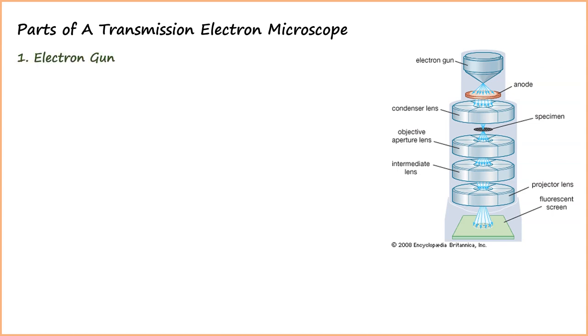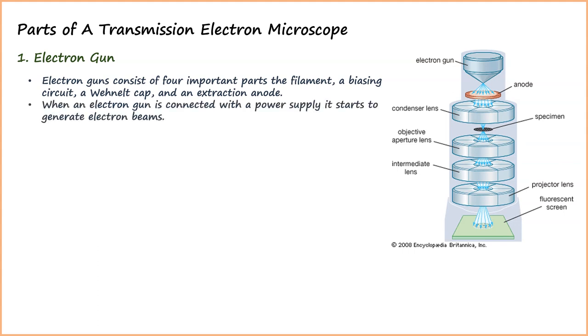An electron gun consists of four important parts: the filament, a biasing circuit, a Wehnelt cap, and an extraction anode. When connected with a power supply, it starts to generate electron beams. These electron beams are moved towards the anode plate and the TEM column.